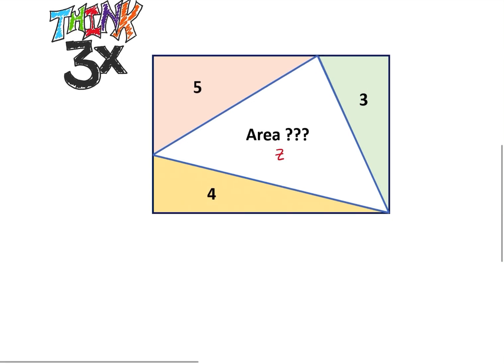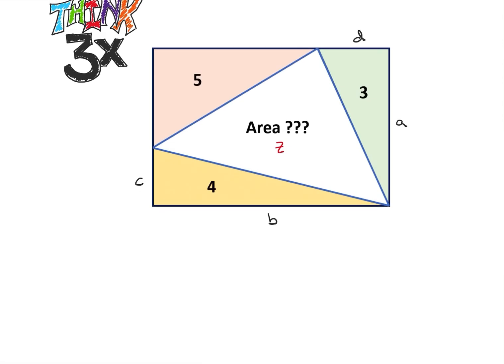All right, and I'm going to start off by defining some lengths. So I'm going to define this right side as A, the bottom as B, and define this side over here as C, and this side over here as D. Okay, so the total of my whole rectangle is my total area. So my total area is going to be equal to A times B, and that's going to be equal to three plus four plus five plus whatever this Z is. So I have AB is equal to 12 plus Z.